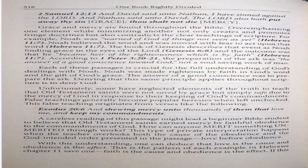Grace and mercy are found throughout the Bible. Overemphasizing one element while minimizing another not only creates and promotes fringe doctrines, but also contradicts the clear teachings of Scripture. For example, Noah was warned of God of things not seen as yet (Hebrews 11:7). Noah believed the word and was moved with fear to act upon that word (Hebrews 11:7). The book of Genesis describes that event as Noah finding grace in the eyes of the Lord (Genesis 6:8). And the outcome was that he became heir of the righteousness which is by faith (Hebrews 11:7). According to 1 Peter 3:20-21, the preparation of the ark was the answer of a good conscience toward God, not a soul saving work of man. Each of these passages is crucial for the full understanding of God's dealings with Noah.